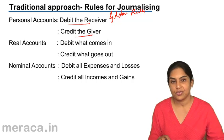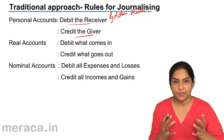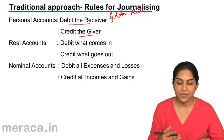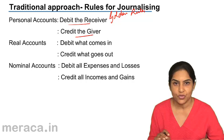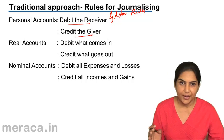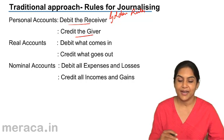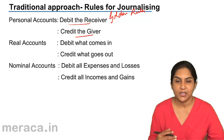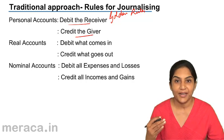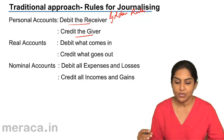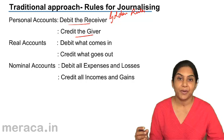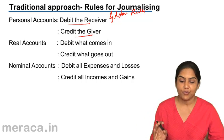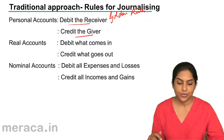Real accounts are basically assets. So we say debit what comes in, credit what goes out. When cash comes in, we would debit it. When cash goes out, we will credit it.